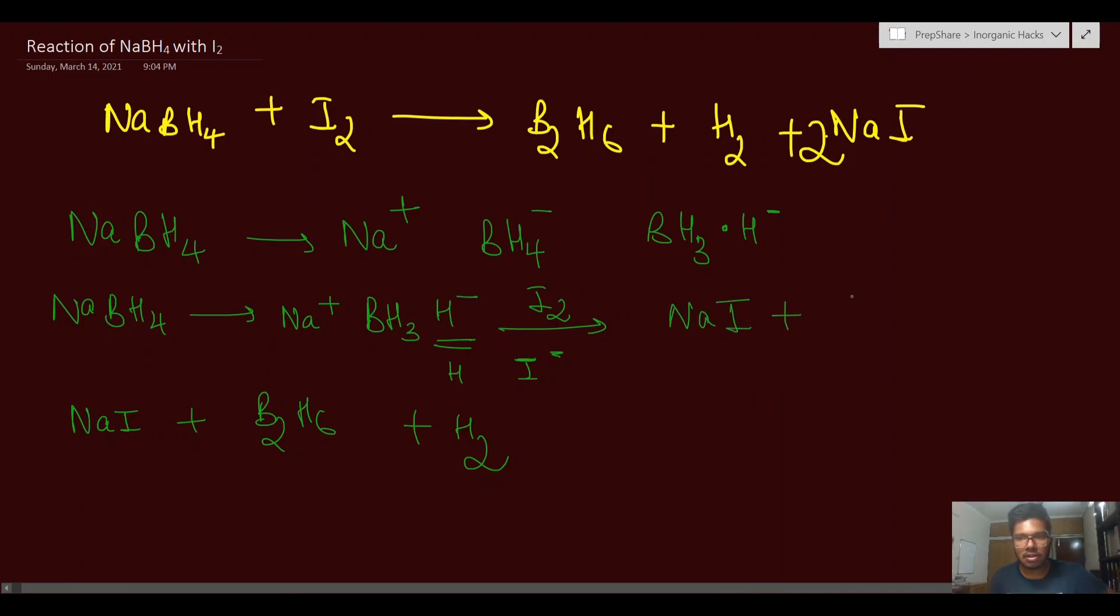And then you have BH3. It's unstable and dimerizes to form B2H6. H radicals are also unstable and dimerize to form H2. In this way, you produce both H2 and B2H6 from this reaction. So it's an important reaction, and I hope you understand it this way.